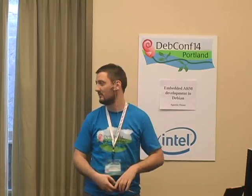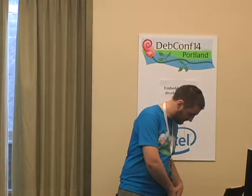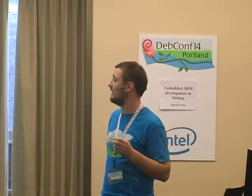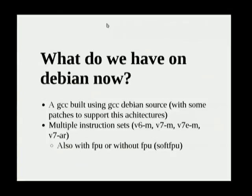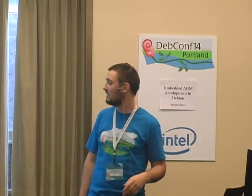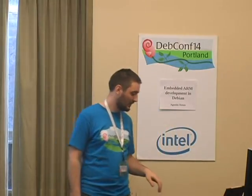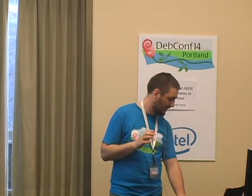What do we have in Debian now? The GCC build comes from the GCC Debian source with some patches applied to support the architectures I mentioned. It supports multiple instruction sets — v6m, v7m, v7em, etc. — and also with or without FPU, depending on the chip you have.